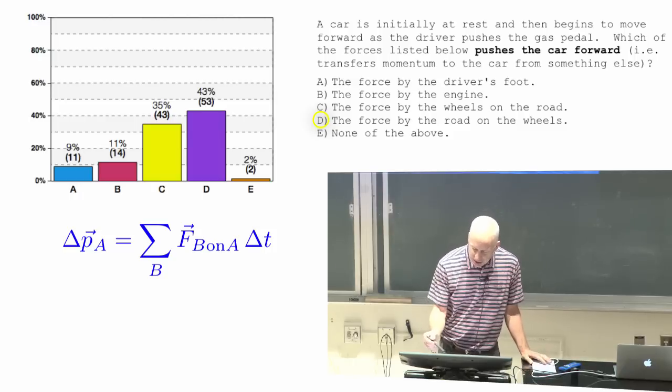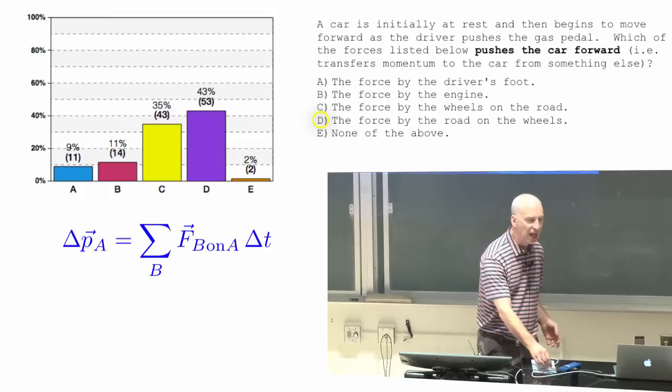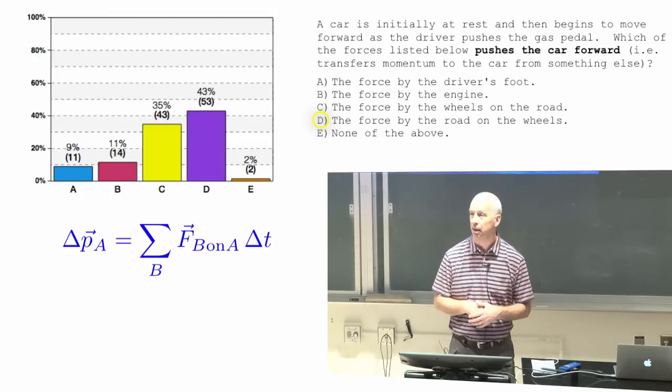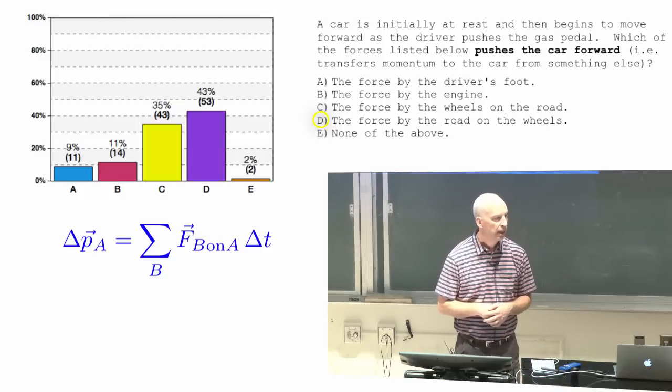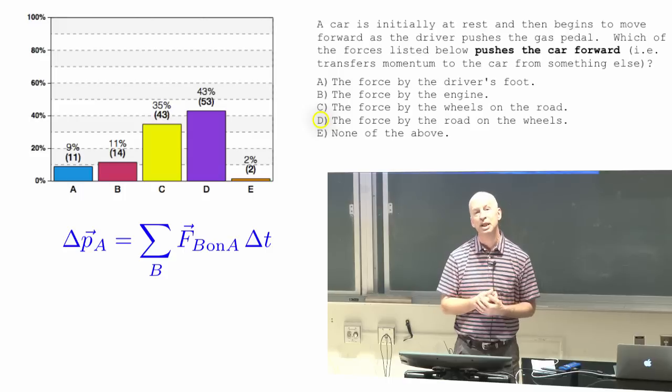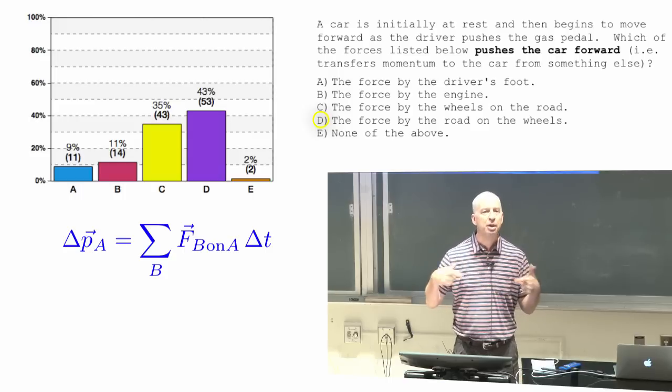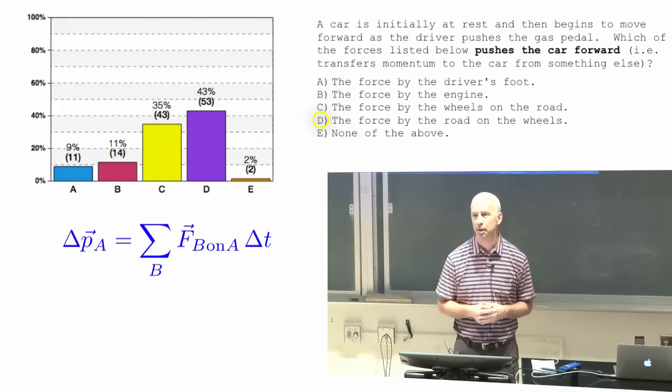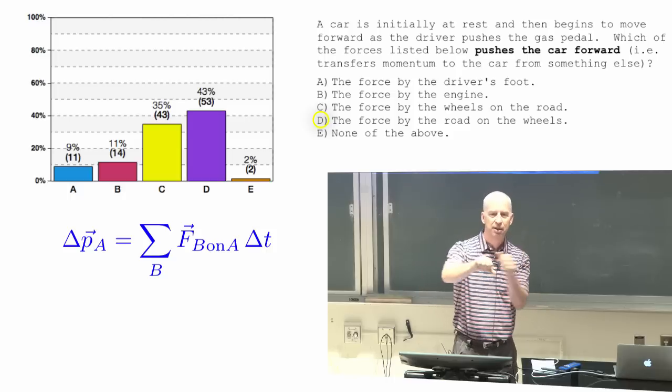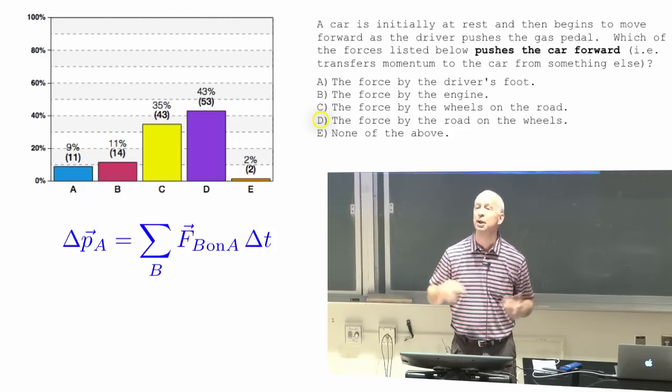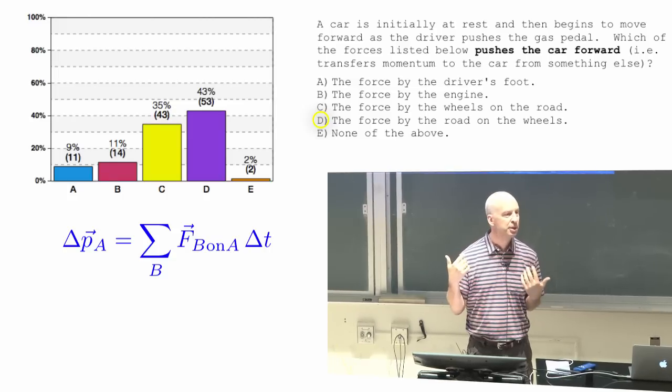The engine does a lot of stuff, but it's all internal. The engine's part of the car. The engine causes the wheels to spin. That's what the engine actually does. It's got linkages so that the wheels turn. What happens when the wheels turn?